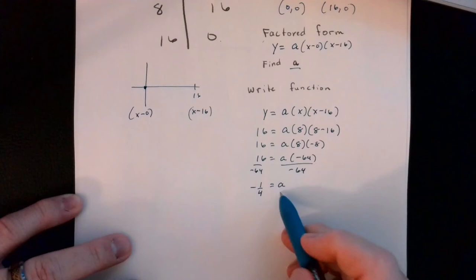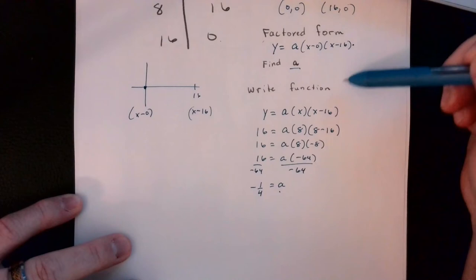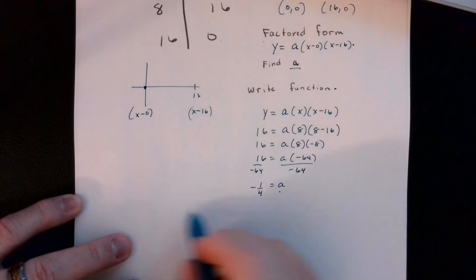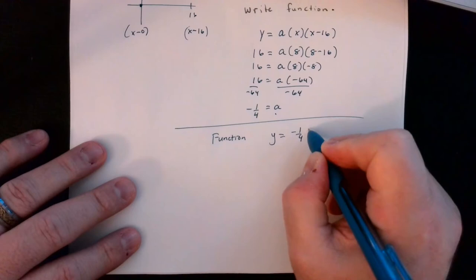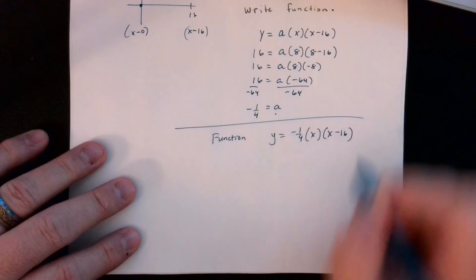Once I have a, I come back to the factored form and write the complete function: y equals negative one-fourth times x times (x minus 16). That's the factored form of the function.